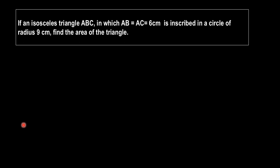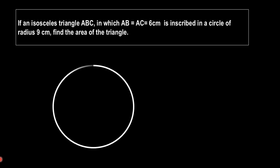In order to find the area of this triangle, we need to use the properties of the circle and properties of triangles. Let's have a figure first. We need a circle with center O and the circle is of radius 9 cm. Next, we need a triangle which is an isosceles triangle with AB equal to AC equal to 6 cm. Inside the circle we have this isosceles triangle.